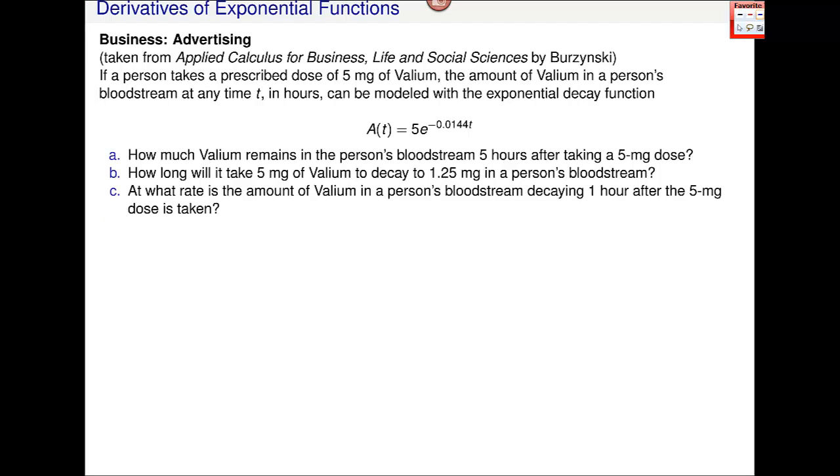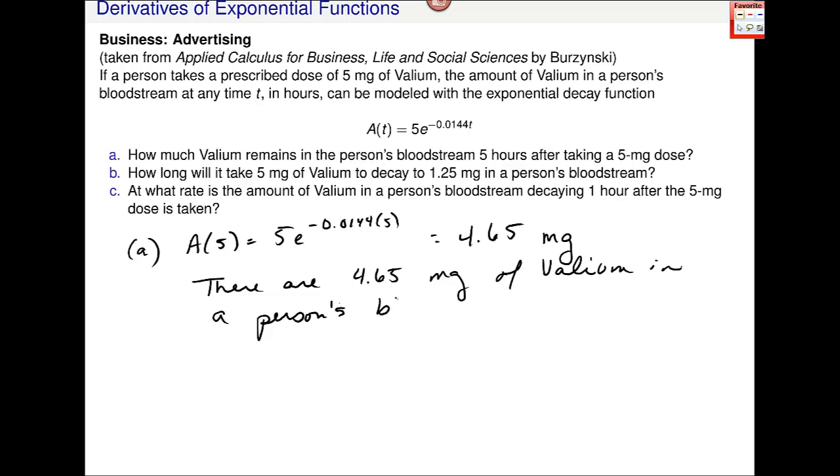How much Valium remains in a person's bloodstream after five hours of taking this dose? That's just A of 5. I plug in five in this original function: 5e^(-0.0144×5) = 4.65 milligrams. In a sentence, there are 4.65 milligrams of Valium in a person's bloodstream five hours after taking a five milligram dose.